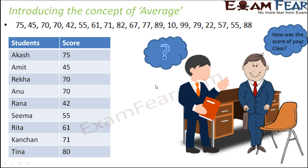So what should the teacher do? Is there any other smarter way of telling the principal how was the score of the class? Yes, of course there is. What he does is he tells the average score of the class. Now instead of telling the individual score of each student, the teacher informs the principal that the average score of the class is somewhere around, say, 70.